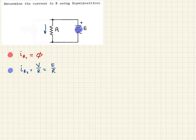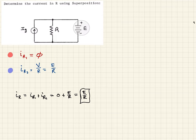So now we have both sources, both source contributions, considered here. So now IR, which is the total, is going to be IR1 plus IR2. So that's going to be zero plus E over R, so then it's just E over R. That would be the current flowing through the resistor in this original circuit. And we found that using superposition.